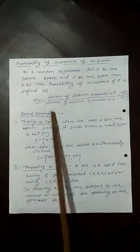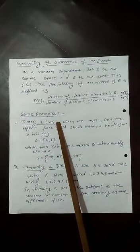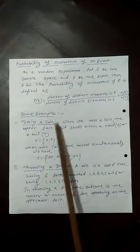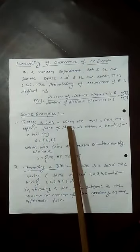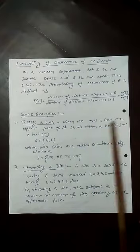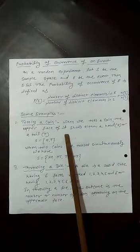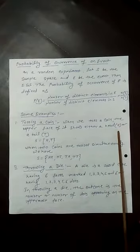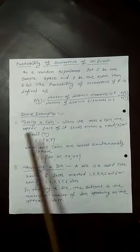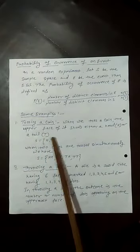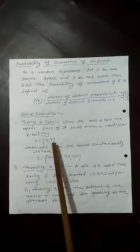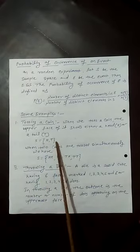Some examples. First, tossing a coin. When we toss a coin, the upper face shows either a head, denoted by H, or a tail, denoted by T. So the sample space S = {H, T}.